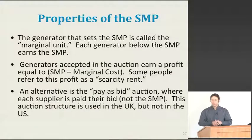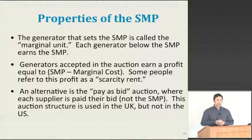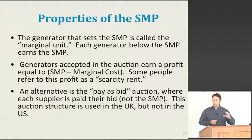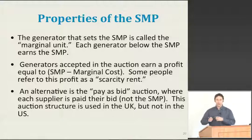The last generator that is dispatched to meet electricity demand is the generator that basically sets the market price, or the system marginal price. The way these uniform price auctions work is that that system marginal price is paid to every generator whose supply offer was lower than the market price. So if you're a generator, your profit during any time period is equal to the market price minus your costs. Sometimes you'll hear this profit referred to as a scarcity rent.